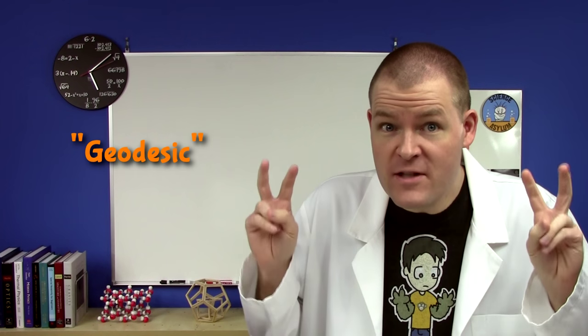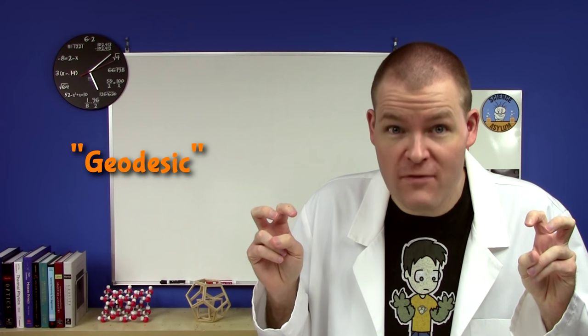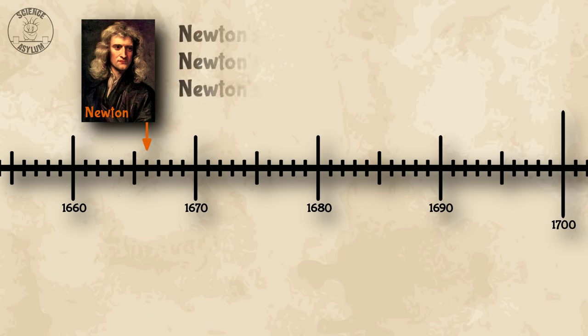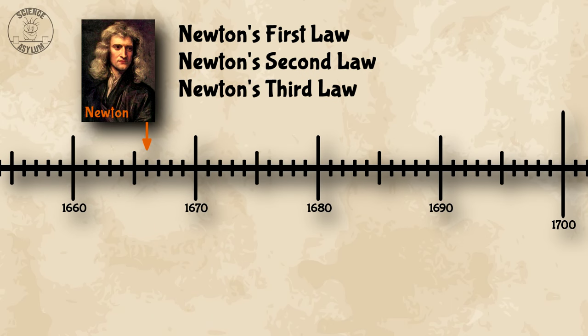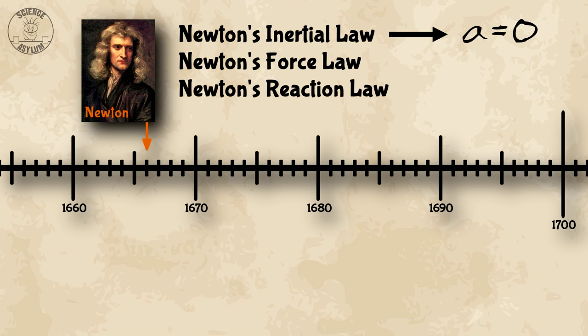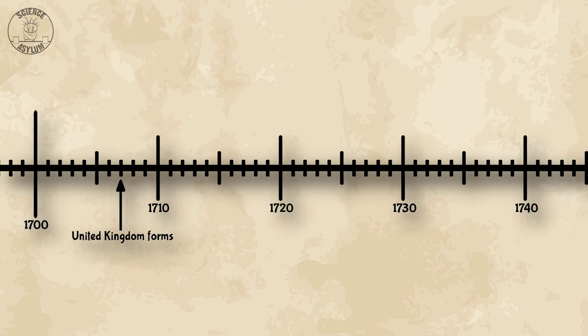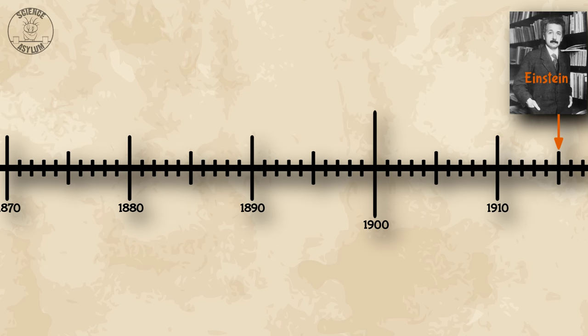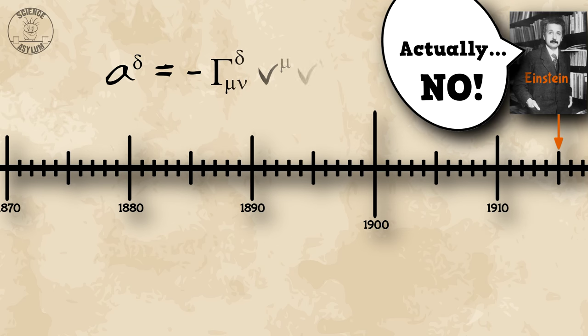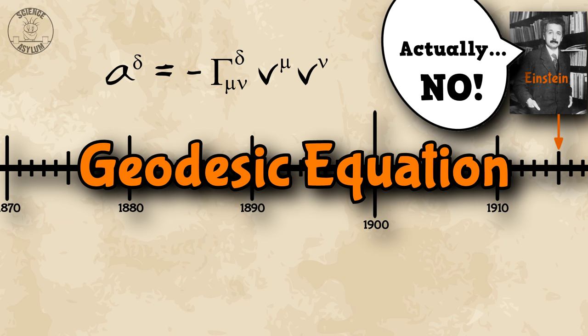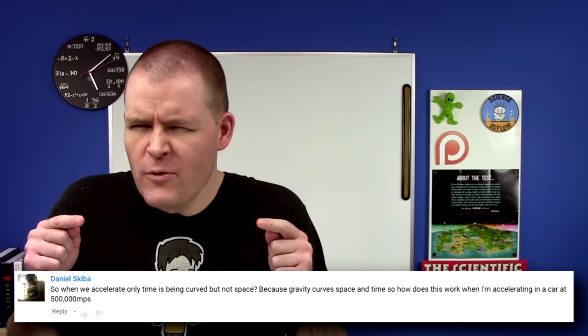What's a geodesic? A geodesic is the new name for an inertial reference frame. Let's start all the way back with Newton. His first law defines what an inertial frame is, which is why it's sometimes called the inertial law. It says acceleration is zero in inertial reference frames. About 230 years later, Einstein says actually no — acceleration is equal to this. We call it the geodesic equation, and it's like a new and improved version of Newton's first law.